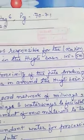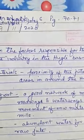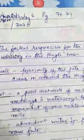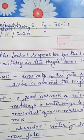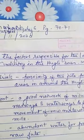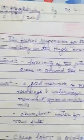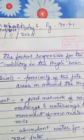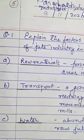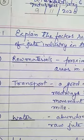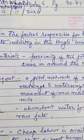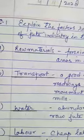Second is transport. A good network of railways, roadways, and waterways is there to facilitate the movement of raw materials to the mills. The rail network includes Eastern Railway from Haura to Dhanbad route, then Southeastern Railway from Haura to Kharagpur-Tata route. The GT Road is there for movement of goods by roadways. The Hooghly river itself helps in transportation of raw materials from farm areas to mill areas.